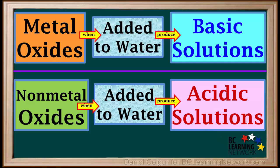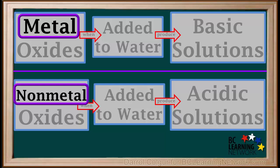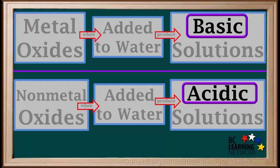It is very important that you remember these two facts. One trick that might help you remember is that the word nonmetal has more letters than the word metal, and the word acidic also has more letters than the word basic. This is only a trick. The best way to remember is to understand why they behave as they do.